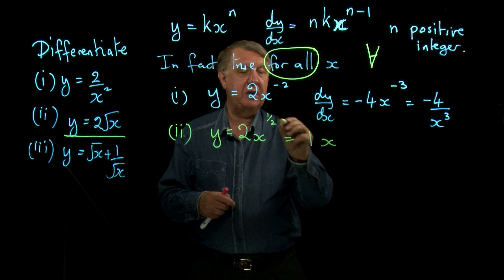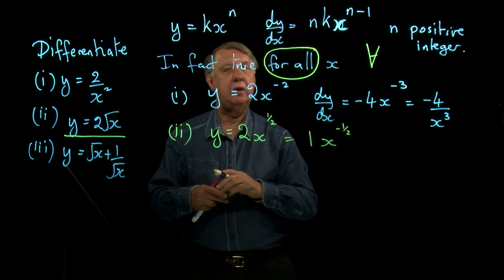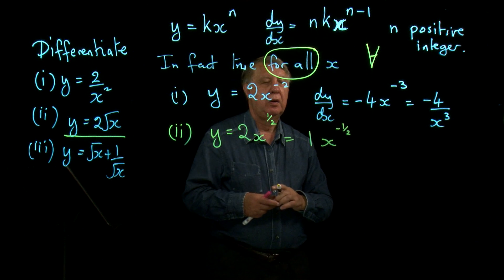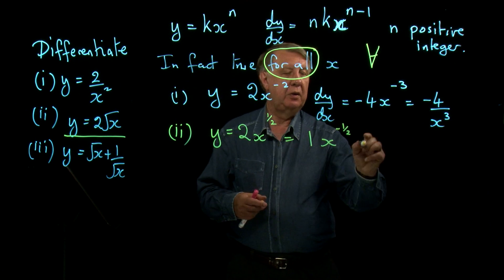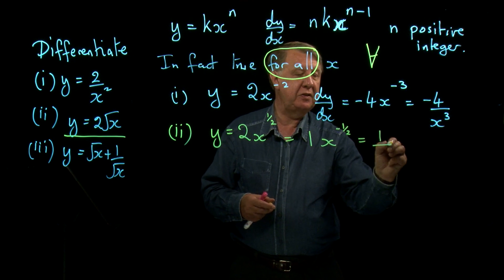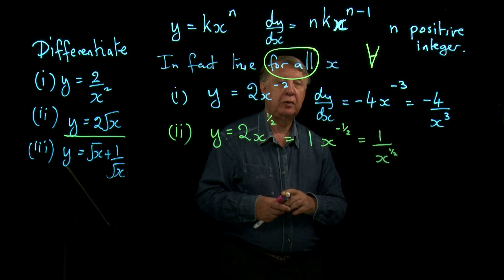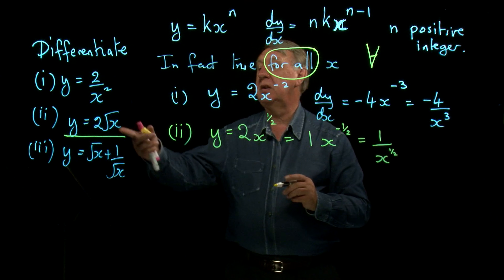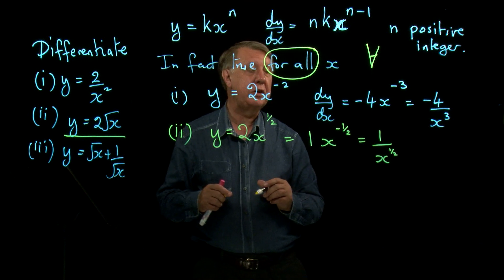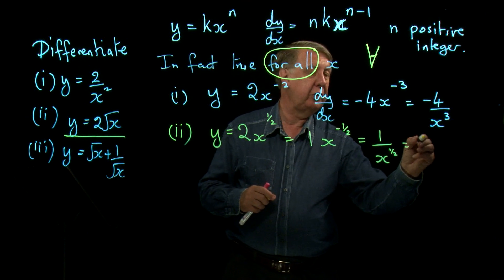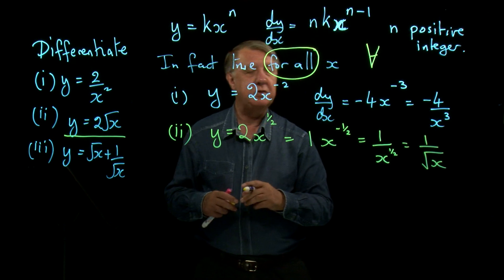x, now take 1 away from a half, gives you minus a half. That is the correct answer, but without a negative power, it's 1 over x to the half. And if you prefer to use the square root symbol, which is how the question was worded in the first place, then you could, if you want, write that as 1 over the square root of x.